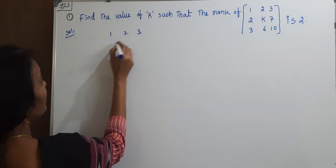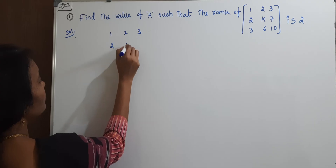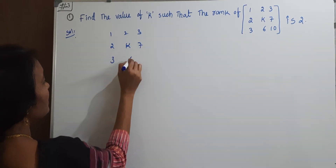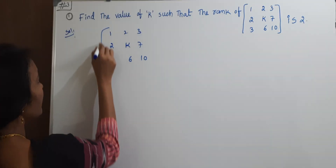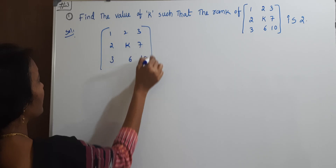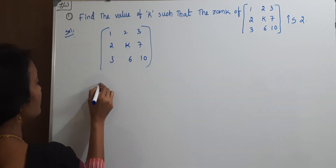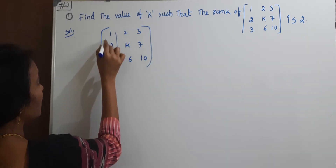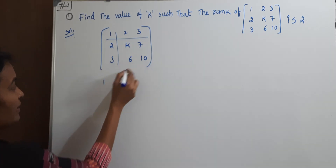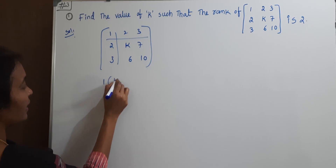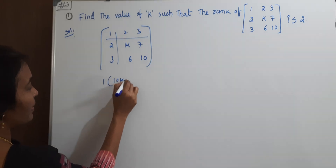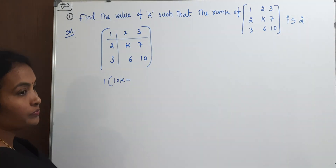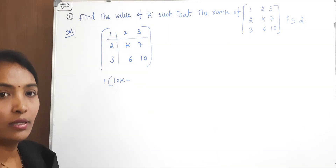The given matrix is: 1, 2, 3 / 2, k, 7 / 3, 6, 10. I need to find the determinant. Considering the first element, remove the corresponding row and column — AD minus BC gives 10k minus 42.